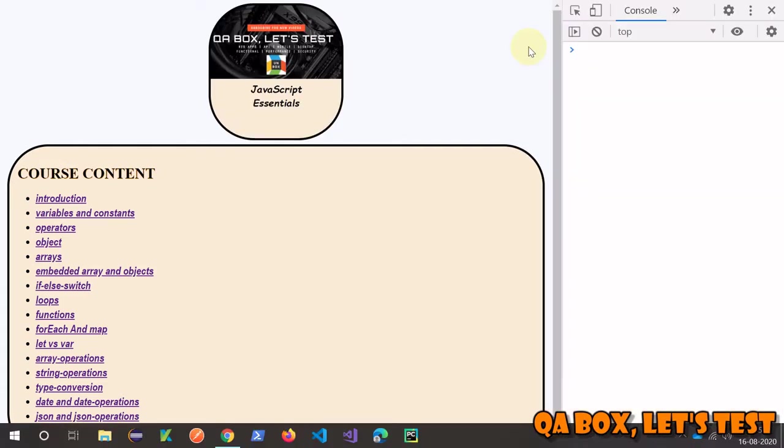In the last video we talked about variables and constants. With the help of variables and constants we store data, we load data into the memory and give the memory location some name, and those are called as variables or constants.